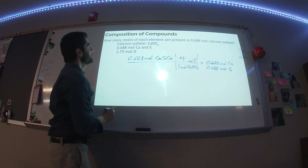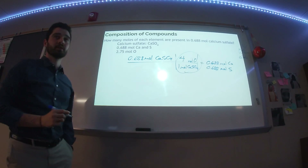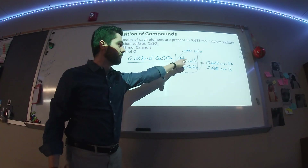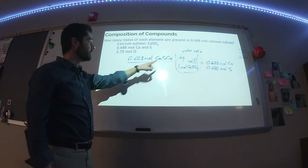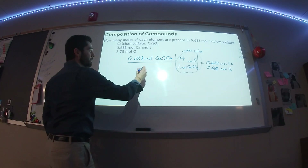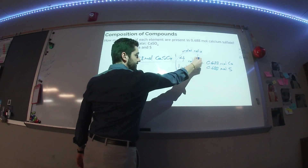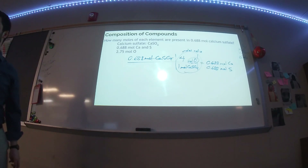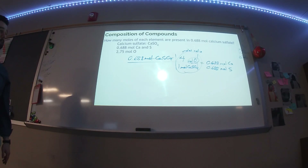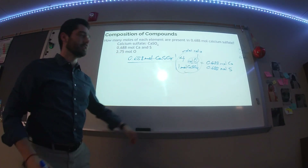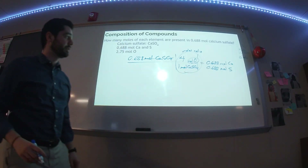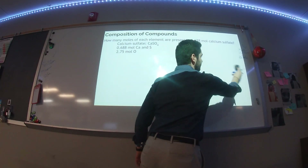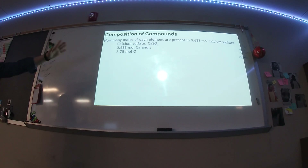What we're using here is a new conversion factor called a molar ratio. It's called a molar ratio because it's a ratio with moles on top and bottom. Notice that the compound is now part of the unit — we're converting from moles of this compound to moles of this species within it. If I just put four moles over one mole, that'd be confusing; to be technical I need to specify the element and the compound. In terms of molar ratios, that's it.